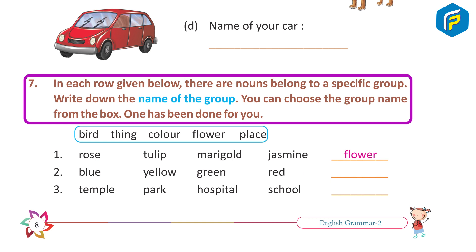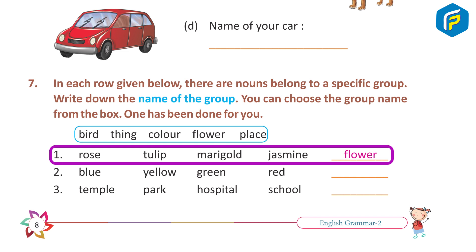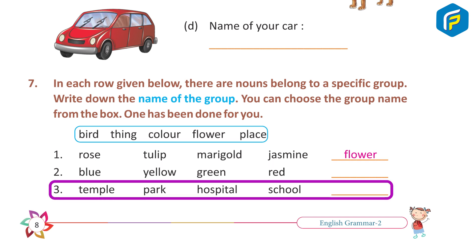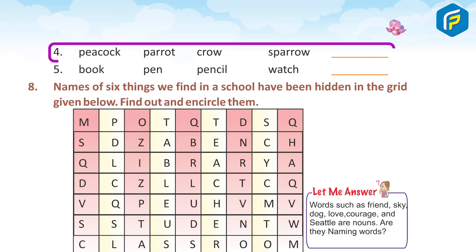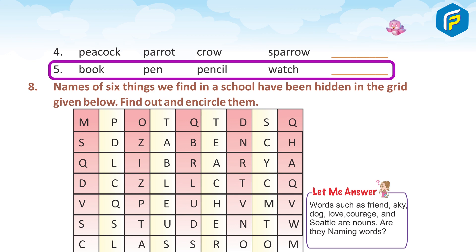Exercise 7: In each row given below, there are nouns belonging to a specific group. Write down the name of the group. Choose from the box: Bird, Thing, Color, Flower, Place. Example already done. Row: Rose, Temple, Park, Hospital, School — Answer: Place. Row: Peacock, Parrot, Crow, Sparrow — Answer: Bird.